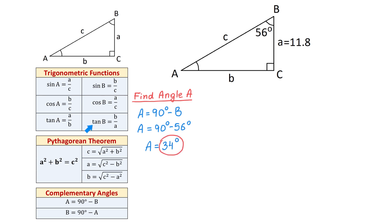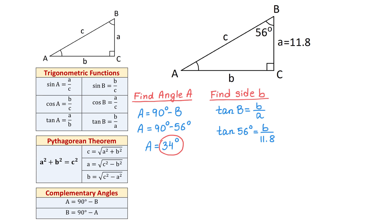Next, I will use the tangent function to find side B. The formula is tangent of angle B equals side B over side A. We replace angle B with 56 degrees and side A with 11.8. To solve for B, we multiply both sides by 11.8, so 11.8 cancels on the right and B equals 11.8 times tangent of 56 degrees. Using a calculator, B is approximately 17.5 units.